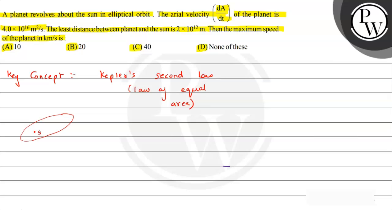And here a planet of mass small m revolves around it. According to this law, let's say first it was at point P and then it comes to point Q. So the area that it sweeps — in time t it sweeps a certain area. In the same time t, at another position it will sweep an equal area, meaning the area swept in equal intervals of time is the same.